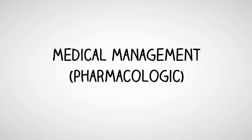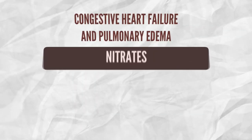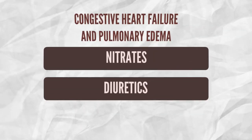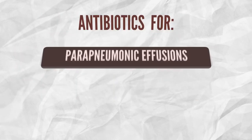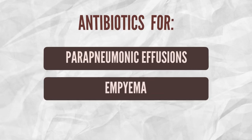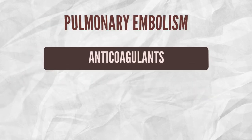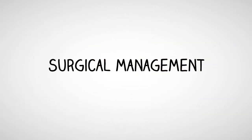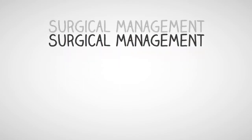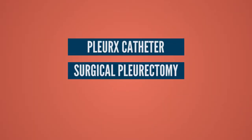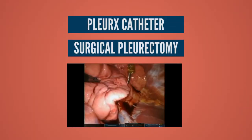Pharmacologic management of pleural effusion depends on the condition's etiology. Nitrates and diuretics are commonly used for congestive heart failure and pulmonary edema. Antibiotics are commonly used for parapneumonic effusions and empyema. Pulmonary embolism is usually treated with anticoagulants. Surgical management includes surgical insertion of a pleuroperitoneal shunt and pleurectomy.